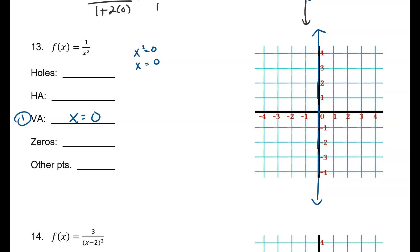All right, so then the next thing we look for are any holes. Well, in this case, there are no holes. Why are there no holes? Because there is no common factor in the numerator and the denominator, right?